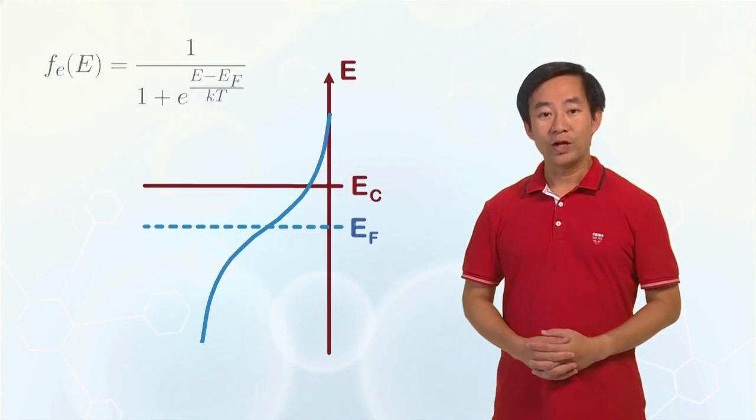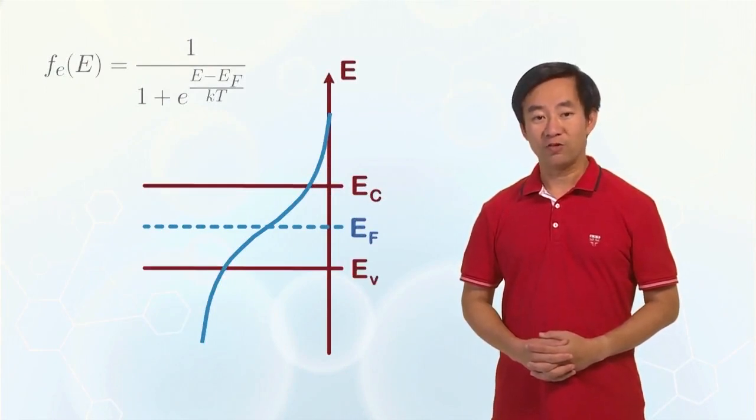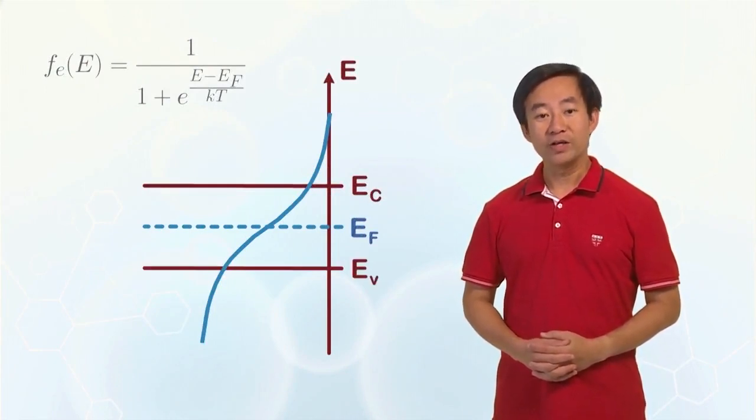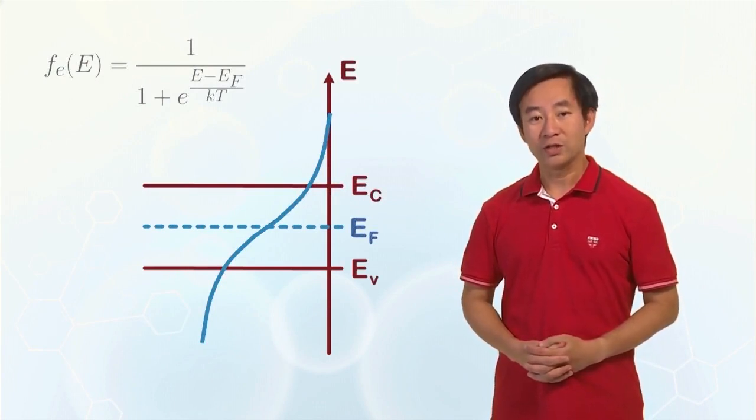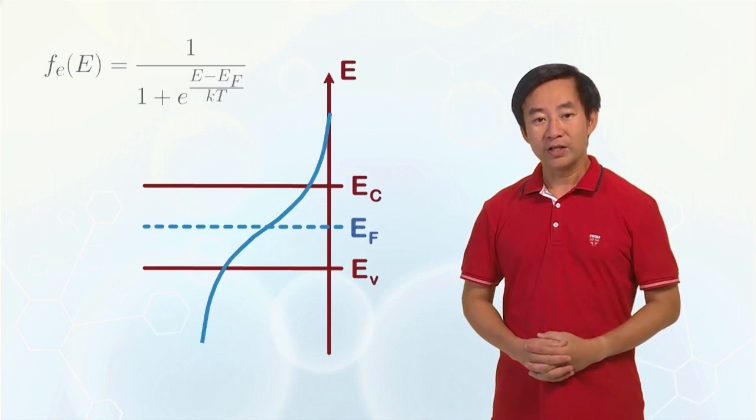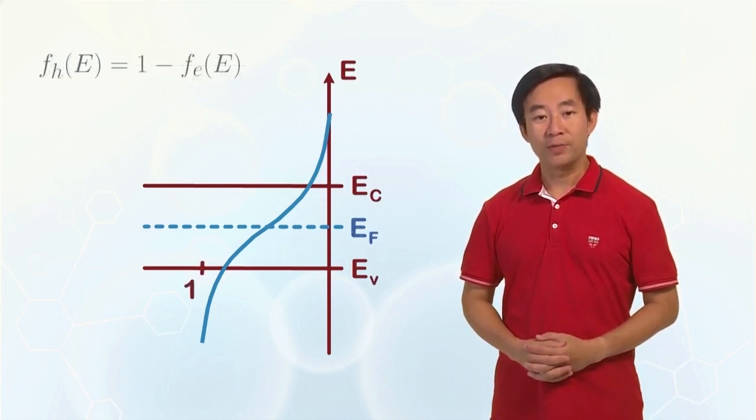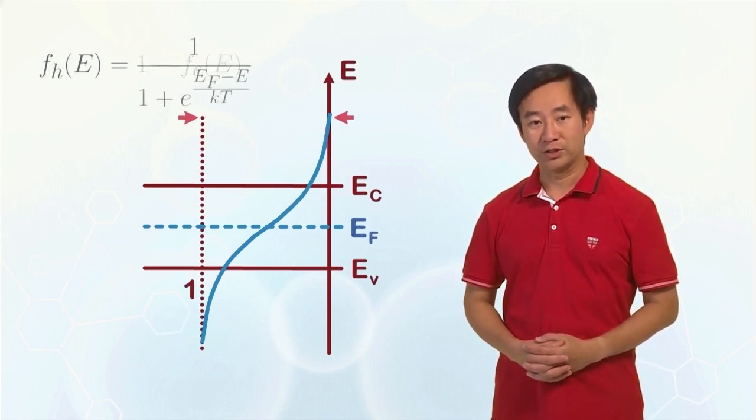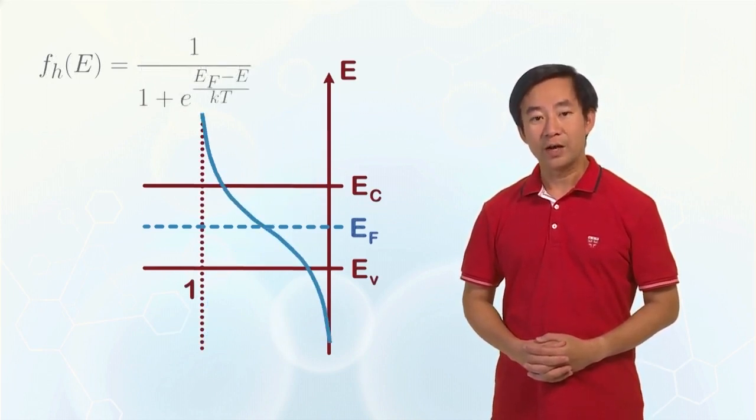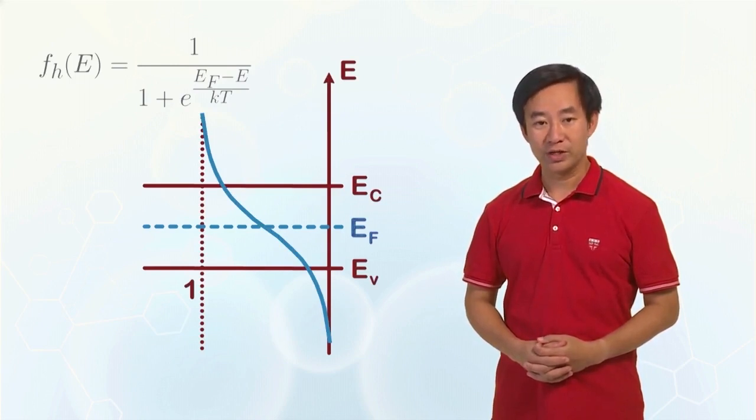In the valence band, we are more interested in finding the number of holes. It is more convenient to count the number of holes if the Fermi-Dirac function for holes is defined. It is given by 1 minus the probability of finding an electron in a state at a particular energy. Or more conveniently, it can be expressed in the form shown here.